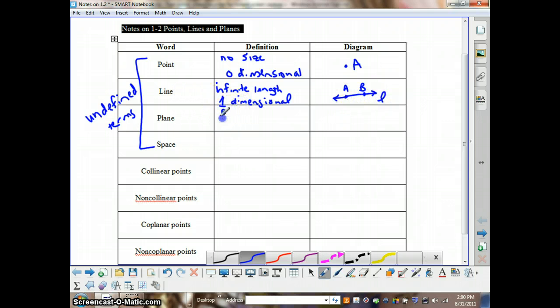A plane is flat, like a piece of paper. It extends infinitely in all directions. And that makes it two-dimensional, so I'll write 2D.